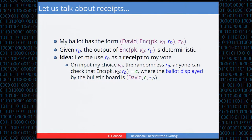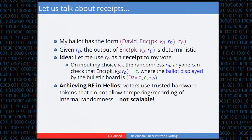The receipt problem: if a voter records the randomness used to encrypt, and the ciphertext is published, it is trivial to produce a receipt — the receipt is simply the randomness, since encryption with that randomness is deterministic. It is known that receipt-freeness in Helios is achievable if the voting device is a tamper-proof hardware secure module that computes the ciphertext but prevents recording of the randomness. However, this is not scalable, since handing a secure module to every voter is expensive.